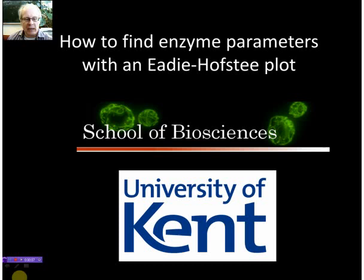Hello everybody, my name is Peter Klapper and I am in the School of Biosciences at the University of Kent. In this video clip I would like to show you how we can find typical enzyme parameters like Vmax and Km from a graph, and in this case from an Eadie-Hofstee plot.